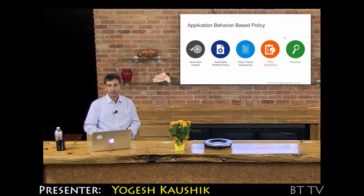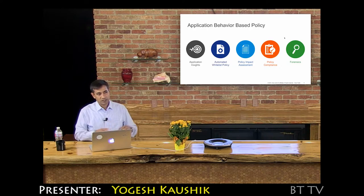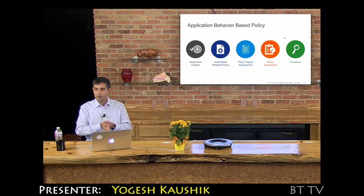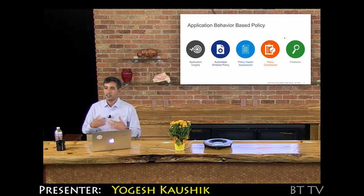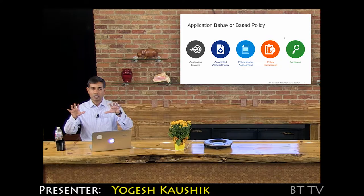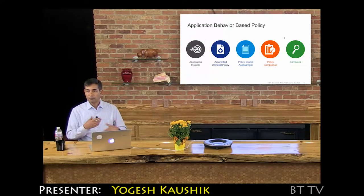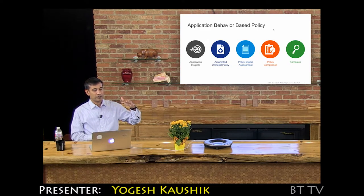What we're shipping today follows a simple model. First, application insights — we observe behavior and create a baseline in real time across tens of thousands of servers in just a few minutes. We can then automate a whitelist policy derived from observed behavior. The policy impact assessment lets you play traffic in real time to see how the policy will affect applications before applying it — a massive improvement for operations and for reaching a more secure, zero-trust model.